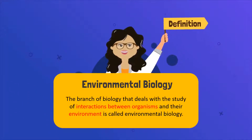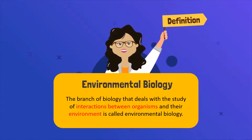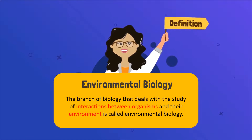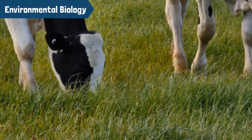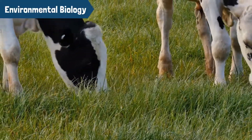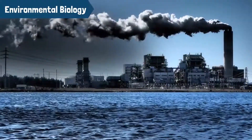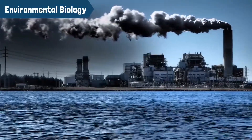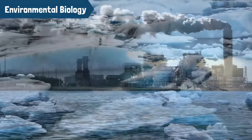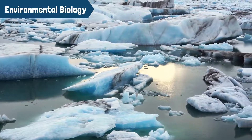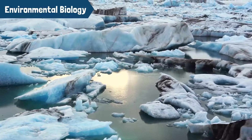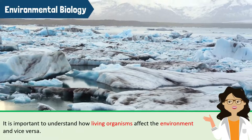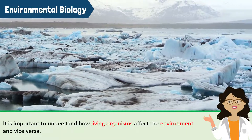The branch of biology that deals with the study of interactions between organisms and their environment is called environmental biology. All living organisms depend upon each other and the environment for their survival. Humans have disrupted previously stable communities of living organisms due to global warming. For example, due to the melting of glaciers and ice caps, the number of polar bears around the world is gradually decreasing. Thus, it is important to understand how living organisms affect the environment and vice versa.